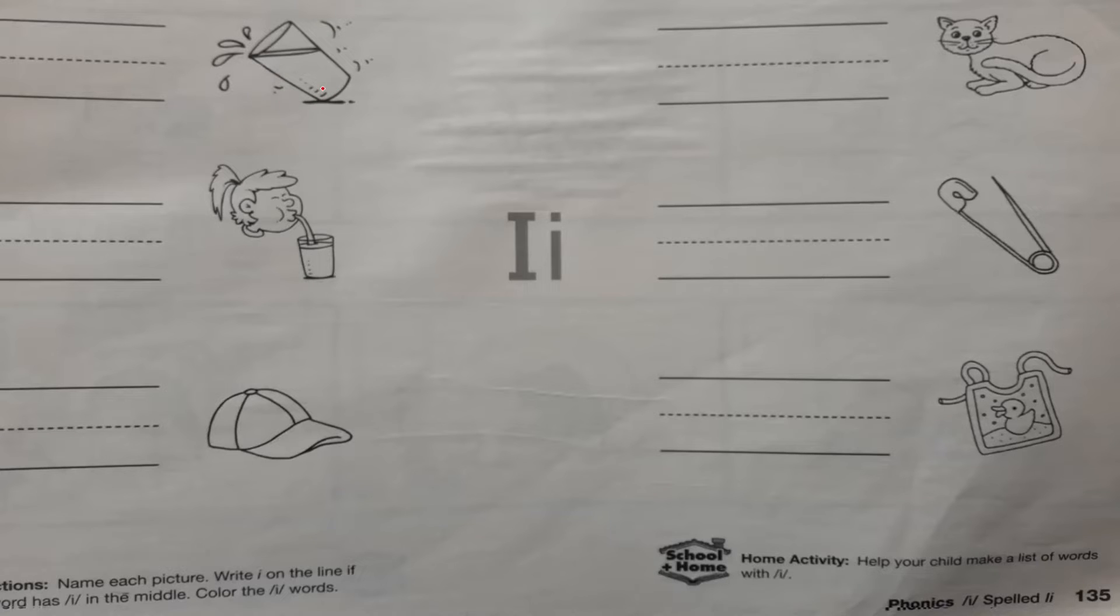Here I have tip. Tip. What letter do I have in the middle? I. Excellent. You write I on the line. Don't forget the point. Here I have sip. Sip. What letter do I have in the middle? I. Excellent job. You write I on the line.